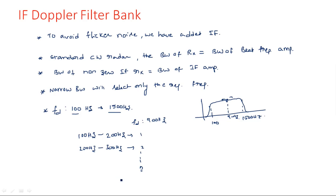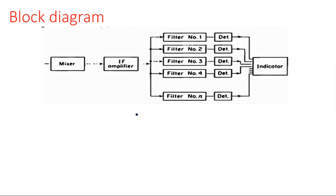In that way, we need to use n number of filter banks. The block diagram of this filter bank method is: mixer output feeds into the IF amplifier, whose output passes through n number of filters. Each filter is dedicated to one specific narrow passband. We need to choose filters 1, 2, 3, and so on up to n — all these must be overlapped filter banks, meaning the higher cutoff frequency of the first filter equals the lower cutoff frequency of the second filter.